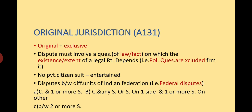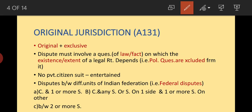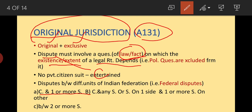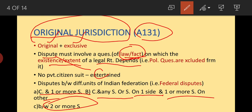First, let's discuss original jurisdiction as mentioned in Article 131. It is original and exclusive. Under original jurisdiction, the Supreme Court deals with disputes involving a question of law or fact on which the existence or extent of a legal right depends — meaning disputes between the Centre and one or more states, or between two or more states.